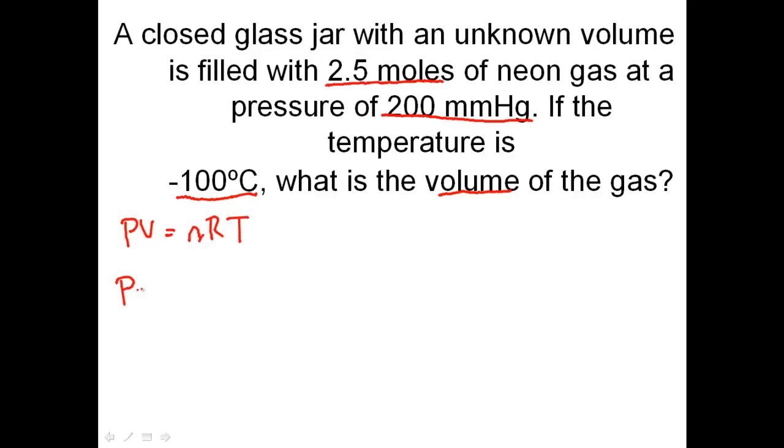Let's plug the numbers in. The pressure is 200 millimeters of mercury. The volume is what we're solving for, expressed in liters. The N is 2.5 moles. The R, because it's millimeters of mercury, is 62.4. The temperature, negative 100 degrees Celsius, convert that to Kelvin plus 273, equals 173 Kelvin. There's still a lot of energy in negative 100 degrees Celsius.